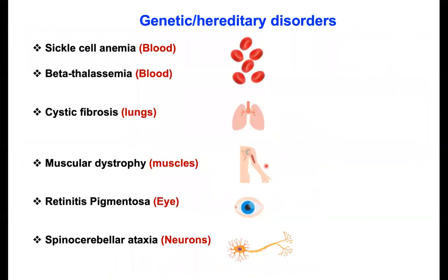These are the common genetic or hereditary disorders. If you take blood disorders: sickle cell anemia, thalassemia, which affects the blood and lungs. The most common genetic disorder in muscles is cystic fibrosis and muscular dystrophy, also called DMD — Duchenne muscular dystrophy. In the eye, the most common genetic disorder is retinitis pigmentosa, and in neurons it is spinocerebellar ataxia.